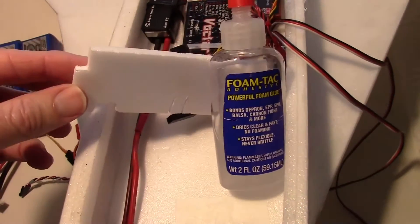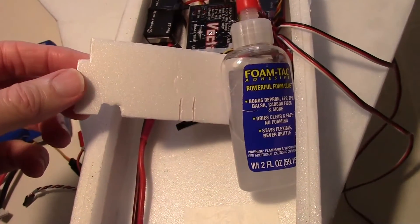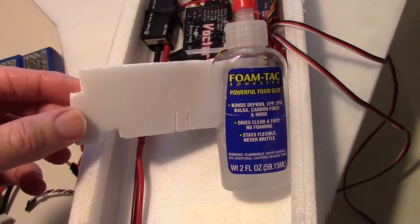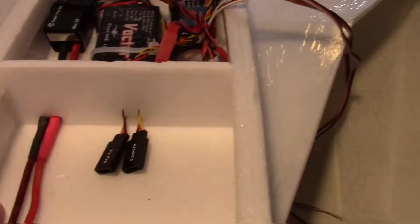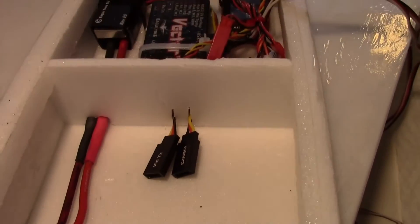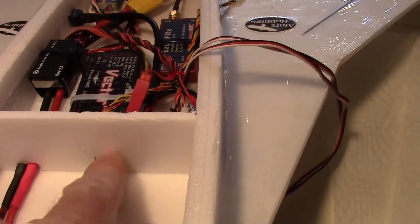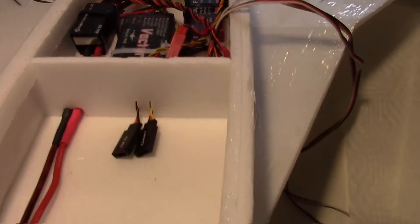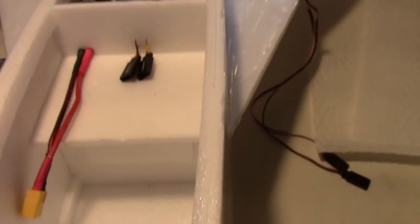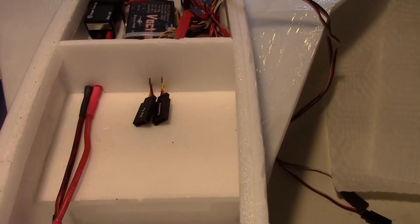So getting ready to glue the bulkhead in with some foam tack. So the bulkhead is now glued in, and you can see the wires coming through. I'll probably put some glue around the wires later and make sure I seal up any cracks. And I also covered up a bulkhead hole down in here, just to keep any water from getting in.